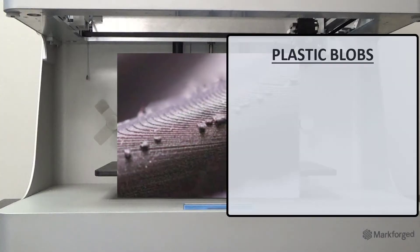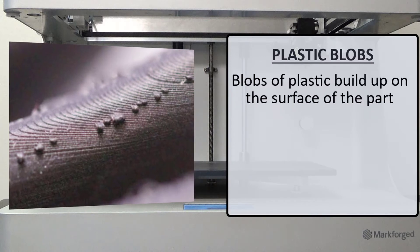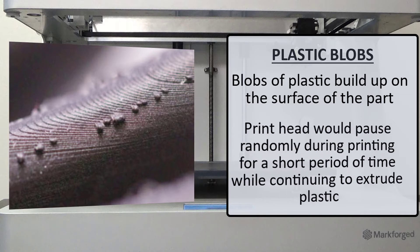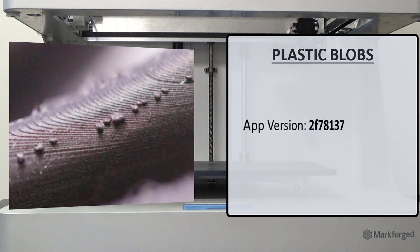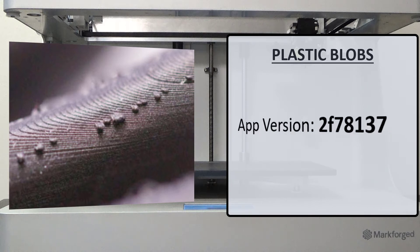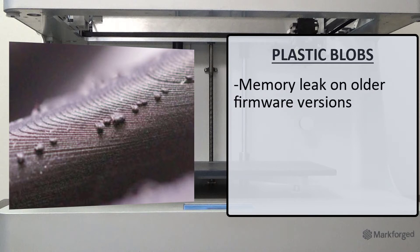If you have an older printer, you may experience plastic blobs like the ones shown. Blobs of plastic build up on the surface of the part. This is commonly associated with a behavior pattern where the print head would pause randomly during printing for a short period of time while continuing to extrude plastic. This behavior should not occur on firmware versions newer than the app versions shown. The cause for this issue would be a memory leak on an older firmware version.